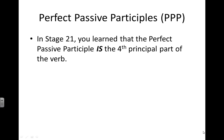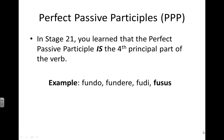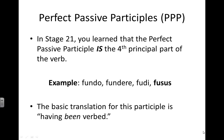Now, to review from Stage 21: the perfect passive participle is the fourth principal part of your verb. So for the verb 'to pour' in Latin — fundo, fundere, fudi, fusis — fusis is the fourth principal part of the verb and therefore the perfect passive participle. The basic translation for this participle is 'having been verbed,' so specifically for fundo it would be 'having been poured.'